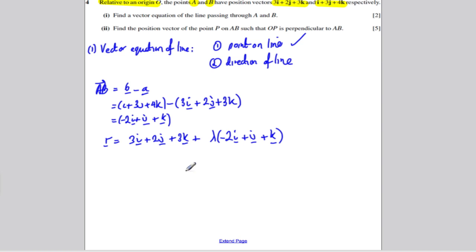And you're done there. I do tend to like to tidy up and write that in one column vector, so it's 3I's take away 2 lambda, so it's 3 minus 2 lambda I, it's 2 plus lambda J, so 2 plus lambda lots of J, and 3 plus lambda lots of K.